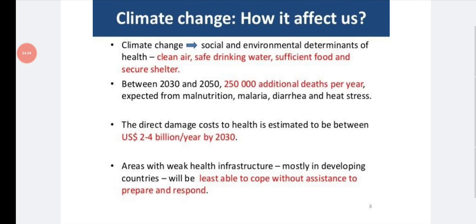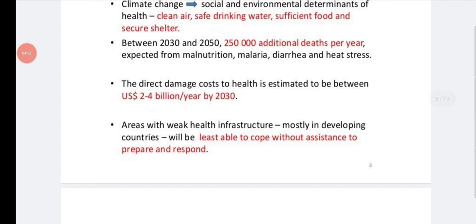The direct damage cost to health is estimated to be between US dollar 2 to 4 billion per year by 2030. So by 2030, we can expect 2 to 4 billion per year only to treat this direct damage to health because of climate change. Areas with weak health infrastructure mostly in developing countries will be least able to cope without assistance to prepare and respond. So without assistance from the United Nations or WHO, these developing countries like India, Pakistan, Bangladesh, Sri Lanka, they cannot cope up with the situation in the future.